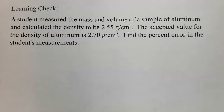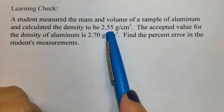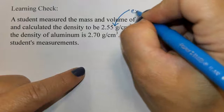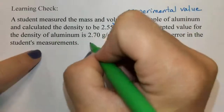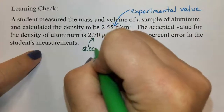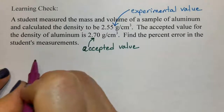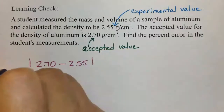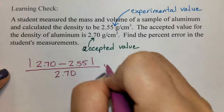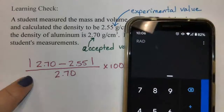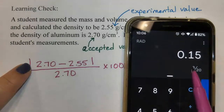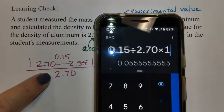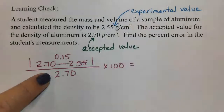Here's another example. A student measured the mass and volume of a sample of aluminum and calculated the density to be 2.55 grams per cubic centimeter — that's the experimental value. The accepted value for the density of aluminum is 2.70 grams per cubic centimeter. Using the percent error equation: |2.70 − 2.55| divided by 2.70, times 100. The difference is 0.15, and 0.15 divided by 2.70 times 100 gives about 5.56% error.